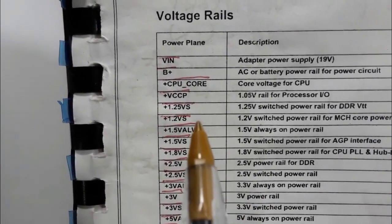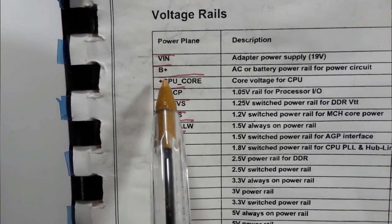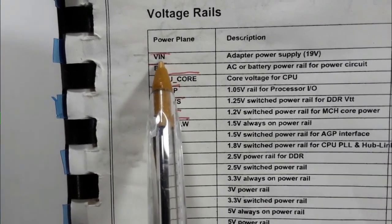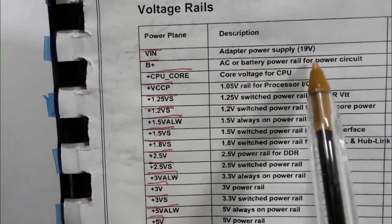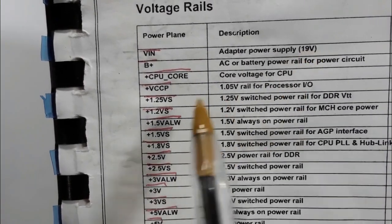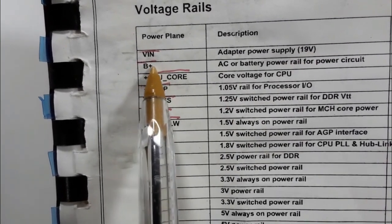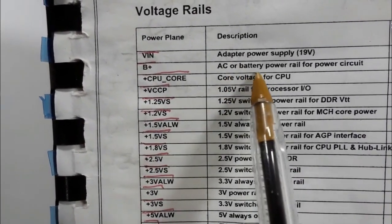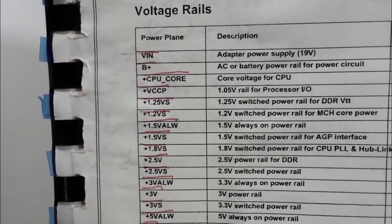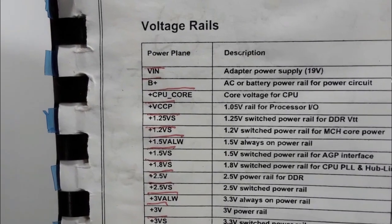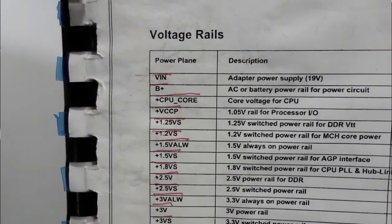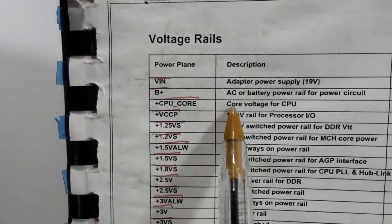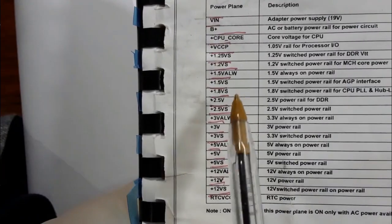These are the voltage rails. We have VIN — the input voltage — here from the adapter power supply, 19 volts. We also have VBAT, which is the AC or battery power rail used by all power circuits. The CPU core voltage is for the processor.